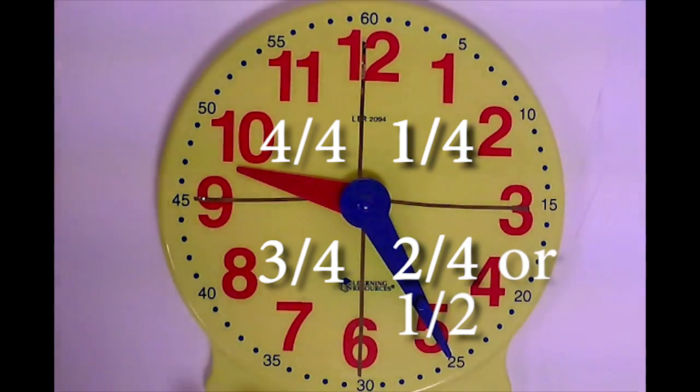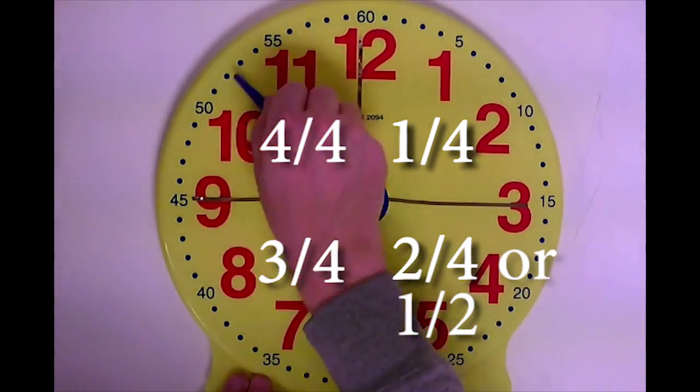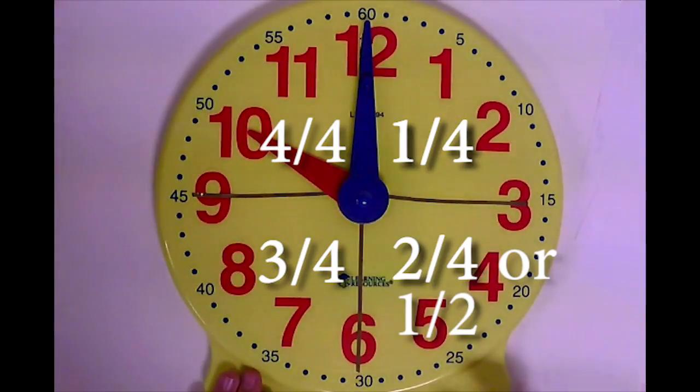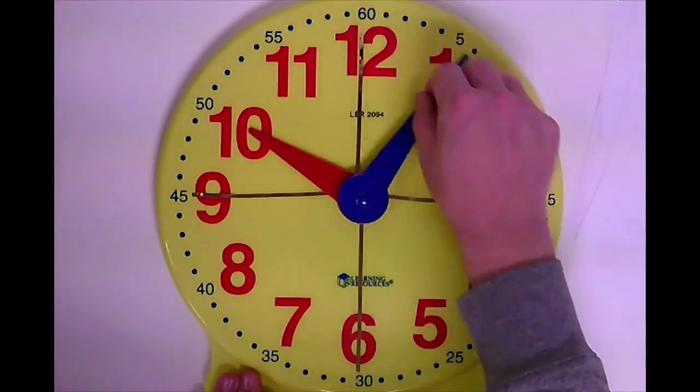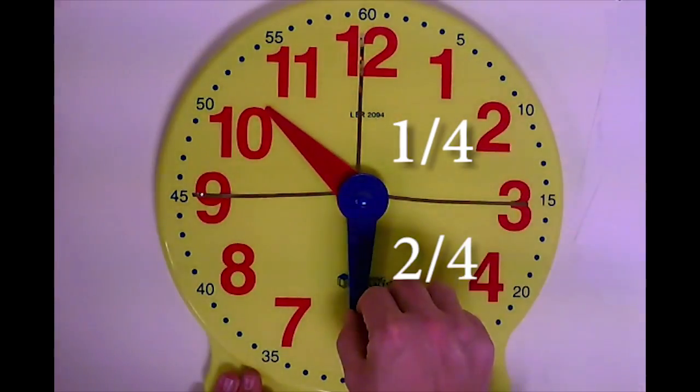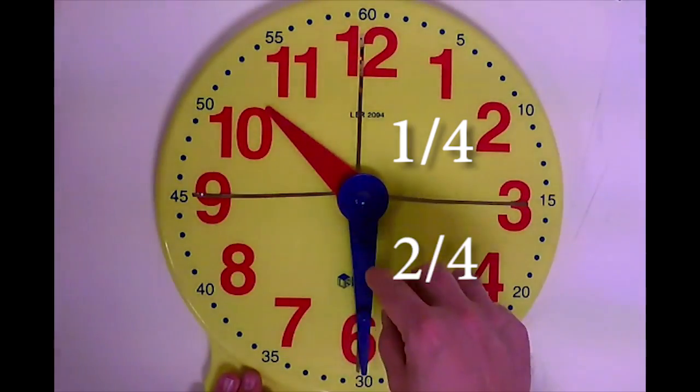So say I start at 10 o'clock. There's 10 o'clock. And I'm supposed to figure out what two quarters past 10 o'clock is. That's one quarter, and that's two quarters. So the time is 10:30.